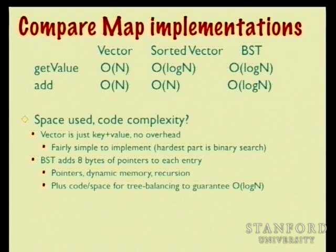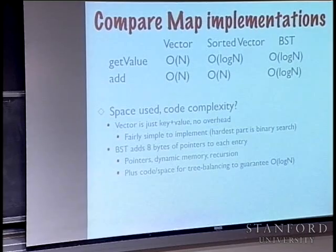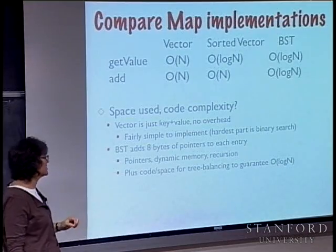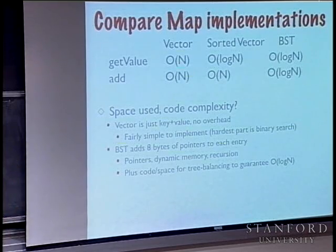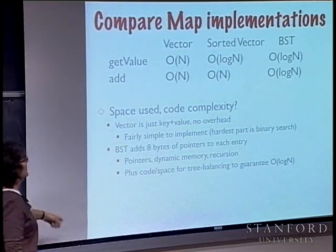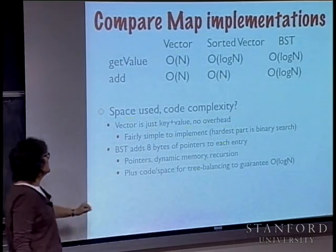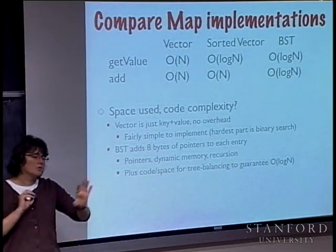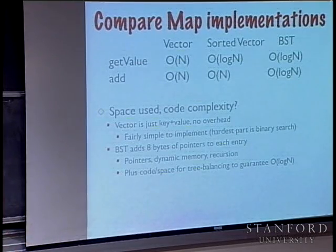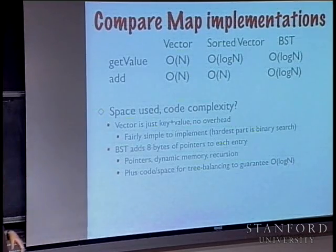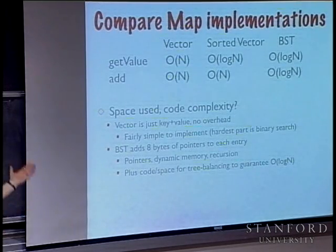As we move to more complex data structures, we need to keep trade-offs in mind. Starting with something simple and a little slower might actually solve the problem at hand. The BST adds memory overhead — left and right pointers, 8 bytes per cell — plus dynamic memory, pointer management, recursion, and potential errors. And providing tree balancing, which we only grazed the surface of, adds quite a lot of complication. A guaranteed log-N BST is a pretty big investment of human capital.